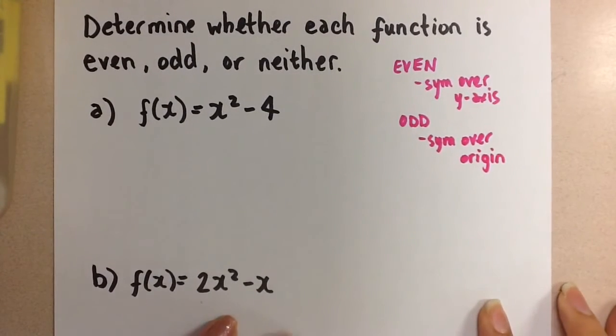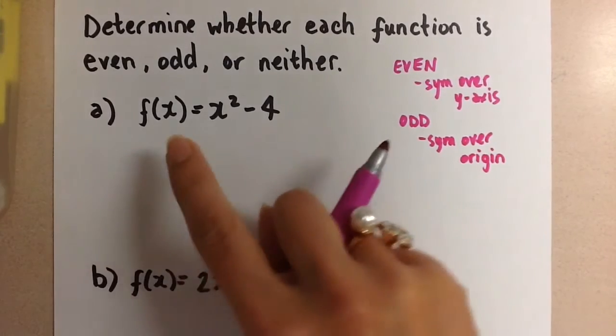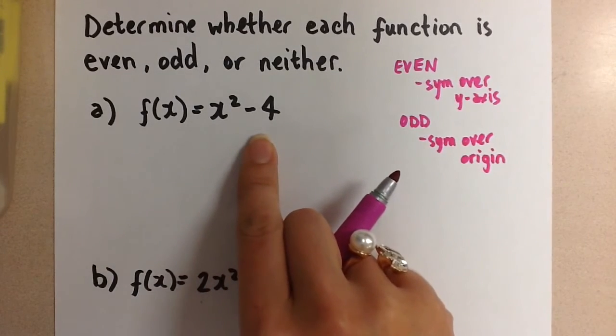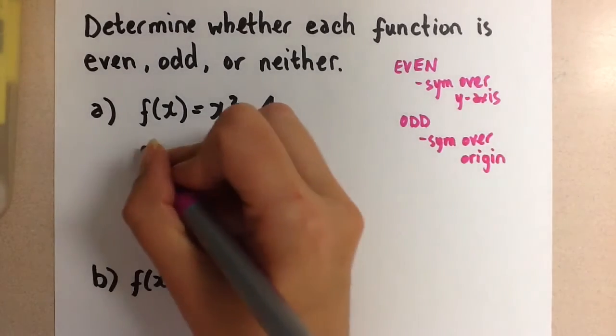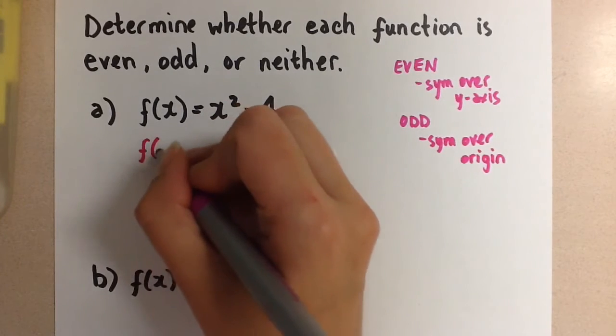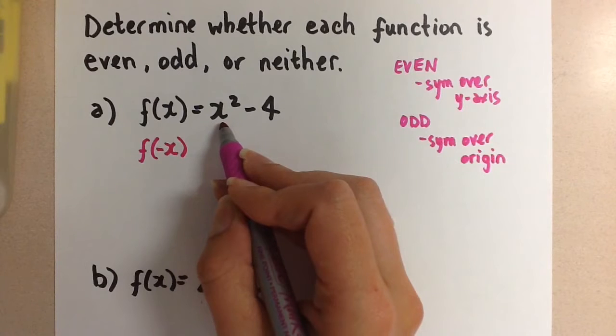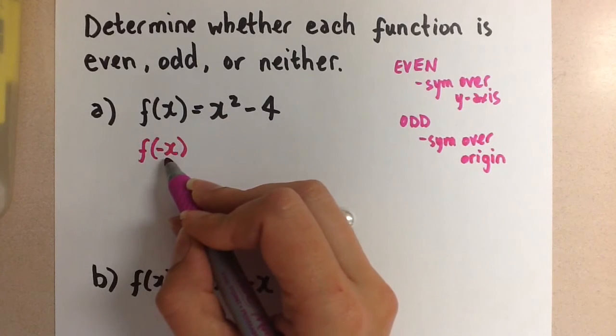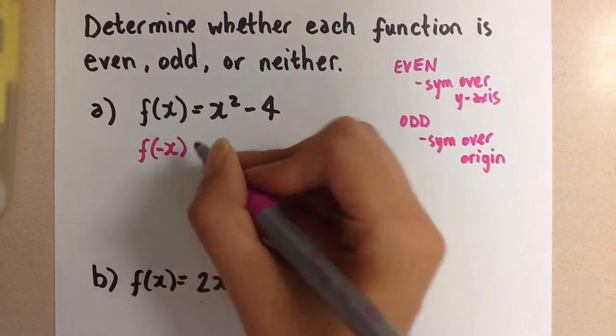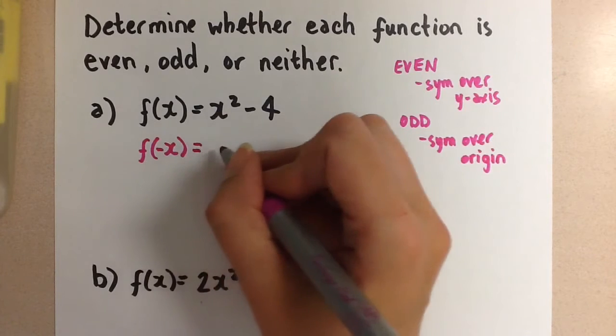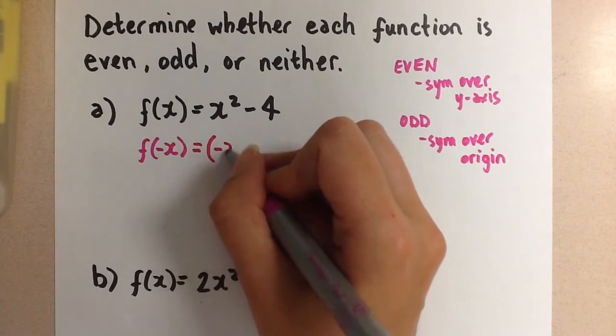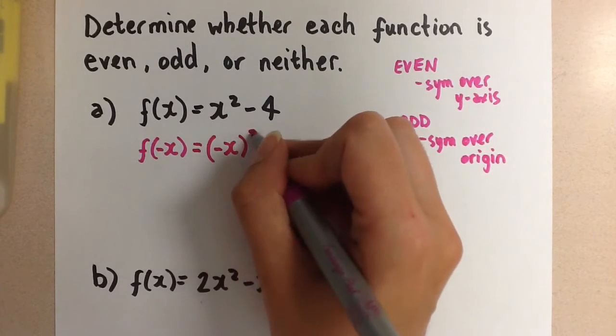But we're going to do this algebraically today. So for the first one, f(x) = x² - 4. The test is always to sub in f(-x). So wherever there is an x in the original equation, we're going to sub in -x instead, and then simplify and see what we end up with. It is really important to include the parentheses when you sub in that -x.